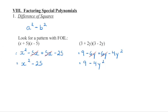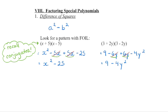Now, if this is what you started with and you had to factor it to get back to the original factors, hopefully you can see that these factors are conjugates. Conjugates are when we have the exact same terms in each bracket, but one is a plus and one is a minus.